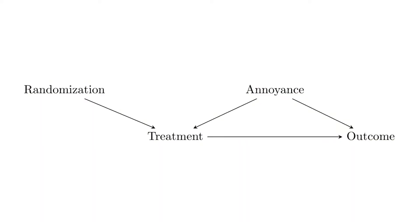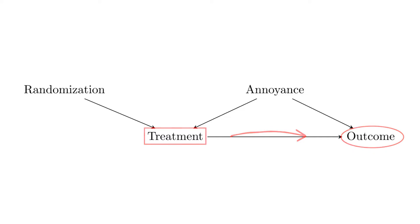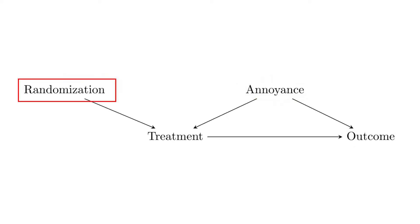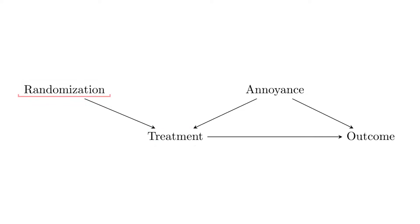For this to be true we need the validity assumption to hold — the instrumental variable must be unrelated to the outcome except through the treatment. That's actually an even stronger condition than just saying there are no back doors. The causal diagram should look like this: there's a treatment, we want to know its effect on an outcome, there's some back door we can't control for — the 'annoying thing' — but there's a source of random variation affecting our treatment.